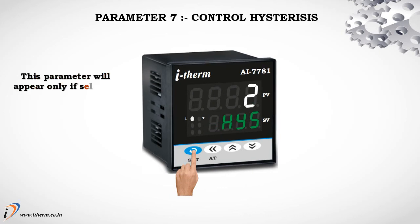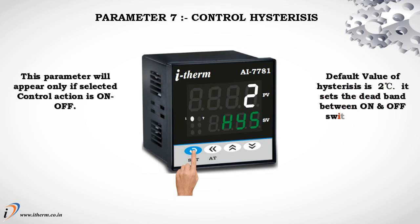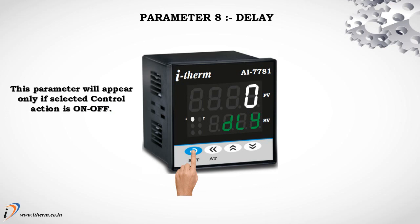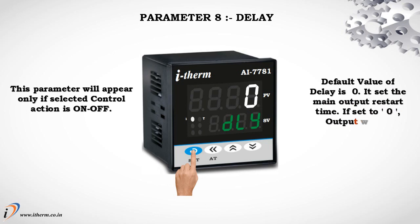Parameter 7 is Control Hysteresis. This parameter will appear only if the selected control action is ON-OFF. The default value is 2 degrees centigrade. It sets the dead band between ON and OFF switching of the output. Parameter 8 is Delay, which also appears only in ON-OFF mode. The default value of delay is 0. It sets the main output restart time. If set to 0, the output will be switched without delay.